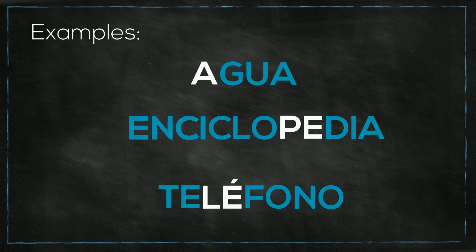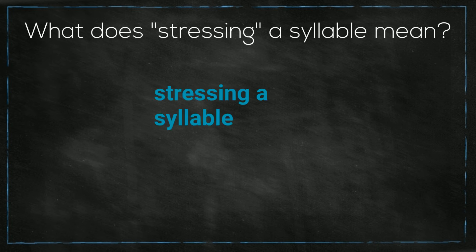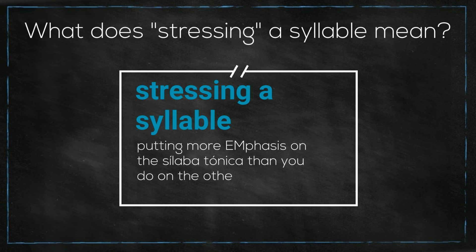Because if we don't do that, we would say teléfono, and that's not how we should pronounce that word. Stressing a syllable just means that you put more emphasis on the sílaba tónica than you do on the other syllables in a word. If you mess this up, you could sound strange or just plain wrong. Like I said, if you said teléfono, it would sound wrong and strange. So you see, accent marks are very helpful.